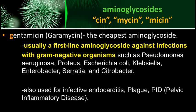Examples of aminoglycosides include those with the suffix '-mycin.' First, gentamicin with the brand name Garamycin — this is the cheapest among aminoglycosides and is usually the first-line choice. It is effective against gram-negative organisms such as Pseudomonas aeruginosa, E. coli, Serratia, Citrobacter, Proteus, Klebsiella, and Enterobacter.